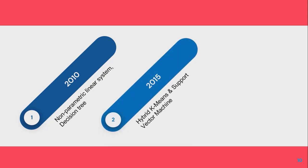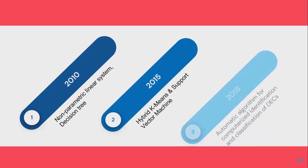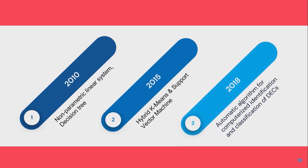In 2015, another research was conducted in which support vector machines were used, with a dataset from the UCI Machine Learning Repository, and they achieved an accuracy of 90%. In 2018, another research proposed an automatic algorithm for computerized identification and classification of fetal decelerations, tested on the same dataset which we have used to classify the CTG signal into the two categories of vaginal and caesarean.